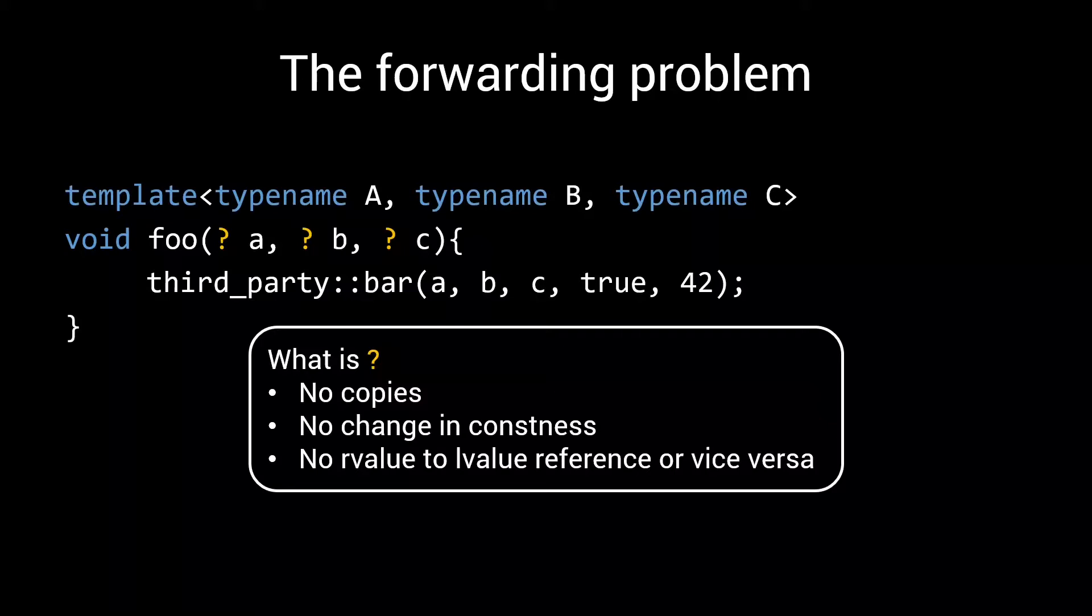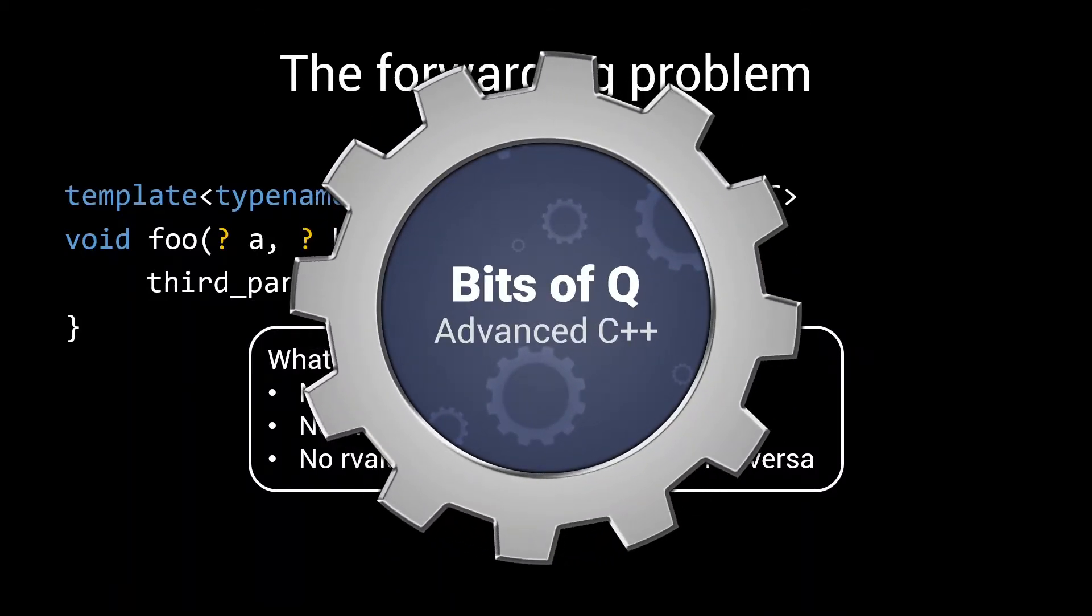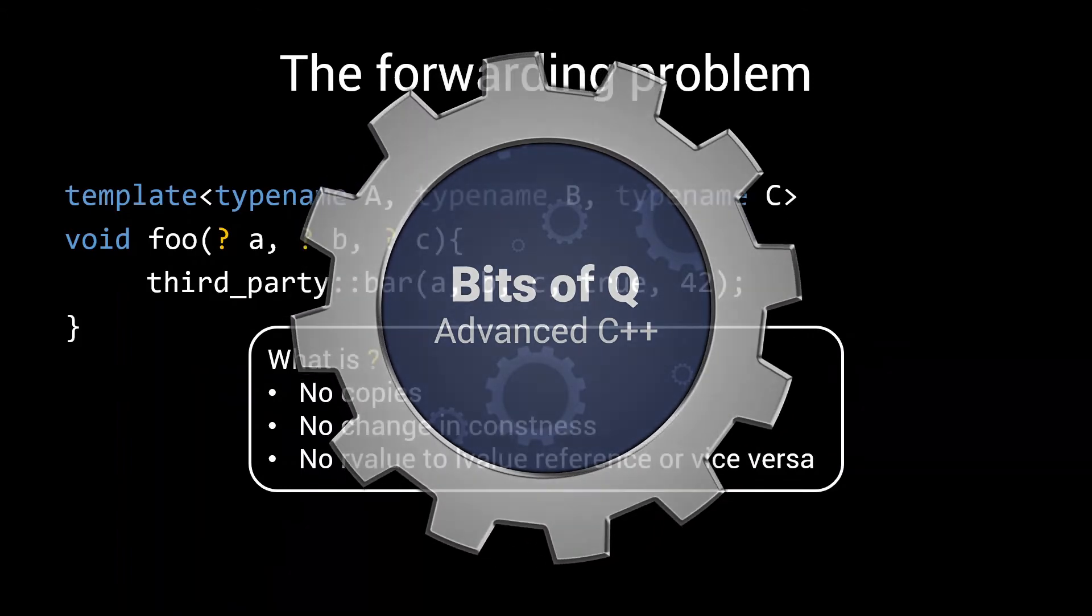It turns out that this is not so easy. As a matter of fact, before we got r-value references in C++11, there was simply no good solution to this problem. My name is Q Rijn, and this is a byte-sized tutorial. Today's topic, perfect forwarding. Let's get started.